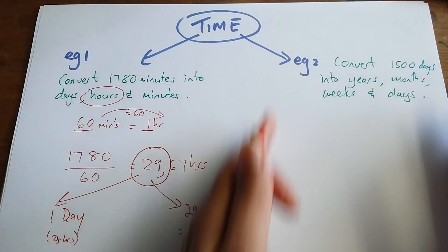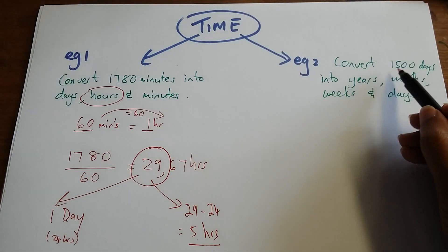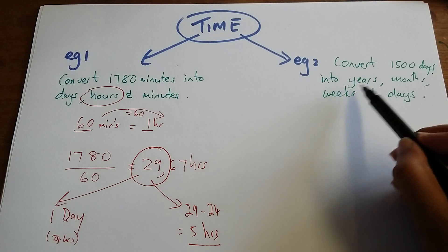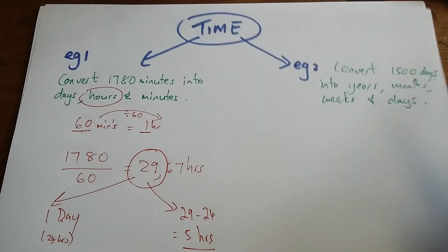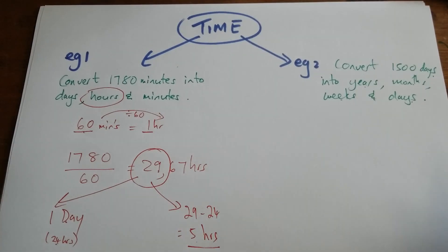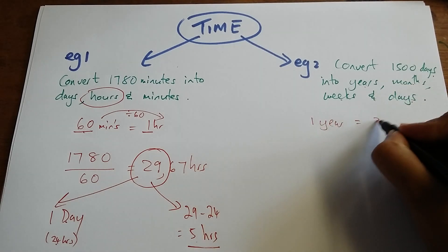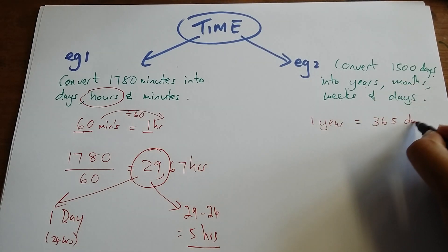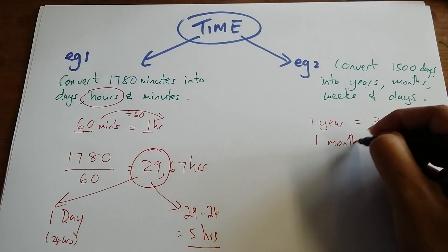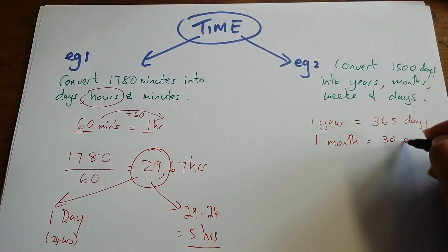Let's look at example 2. It says convert 1500 days into years, months, weeks and days. So we will start with years. We'll say 1 year equals 365 days. Let's take a month as 30 days.